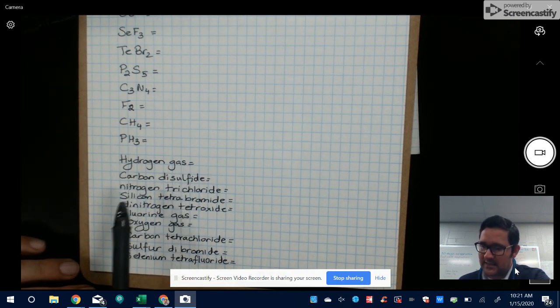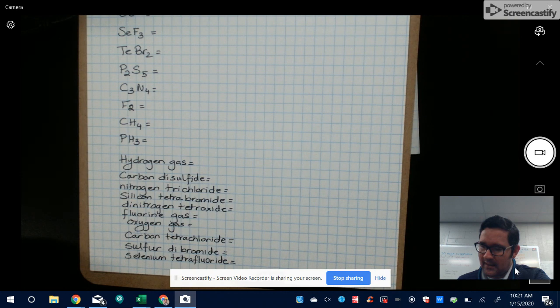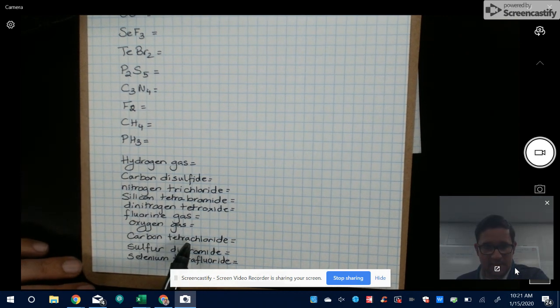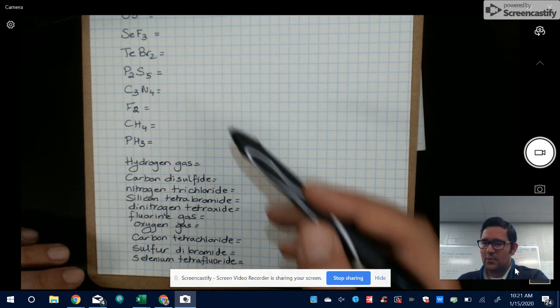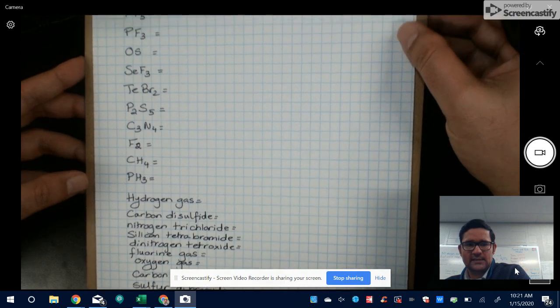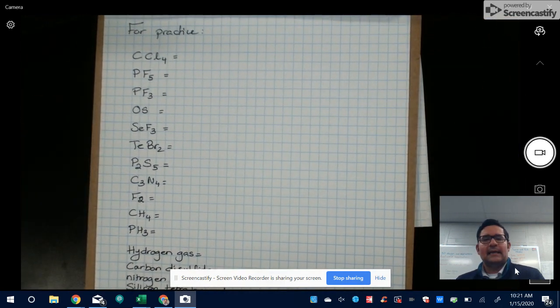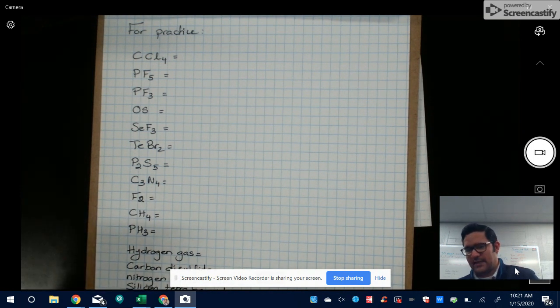So for hydrogen gas, carbon disulfide, nitrogen trichloride, silicon tetrabromide, dinitrogen tetraoxide, fluorine gas, oxygen gas, carbon tetrachloride, sulfur dibromide and selenium tetrafluoride. So you want to go ahead and answer all of these in a Google Doc or on your sheet of paper and upload it to the Dropbox. Please submit it before the due date. Thank you.